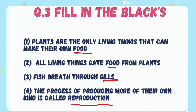Question number three: fill in the blanks. First — plants are the only living things that can make their own food. All living things get food from plants. Fish breathe through gills. The process of producing more of their own kind is known as reproduction.